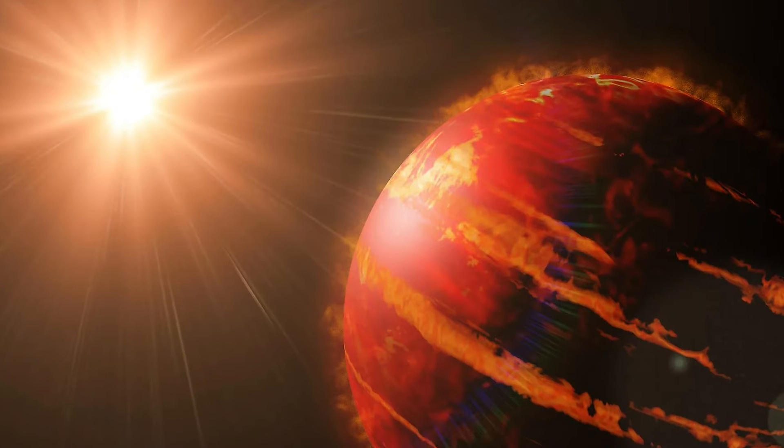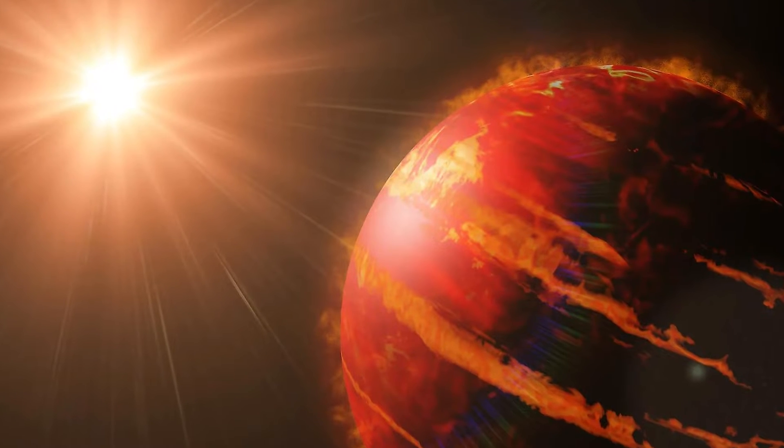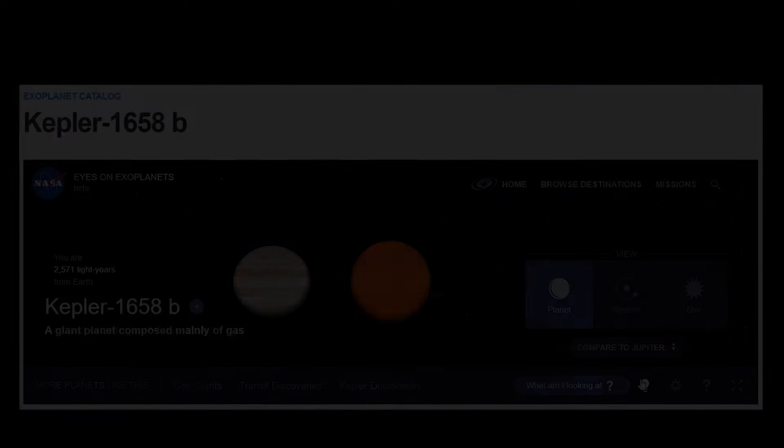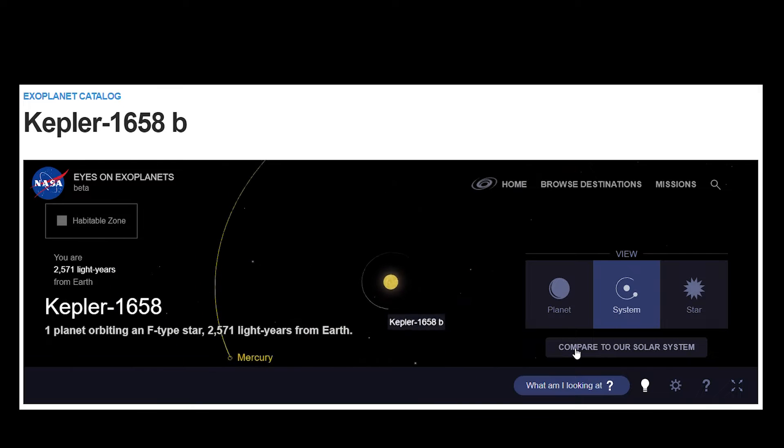The hot Jupiter planet Kepler-1658b can be found 2,600 light years from Earth. Despite being almost the same size as Jupiter, this planet is much hotter than our own solar system's gas giant because it circles its home star at just one-eighth the distance between the Sun and Mercury.